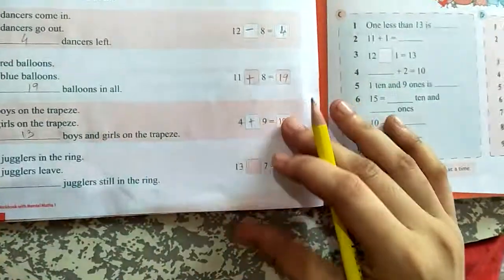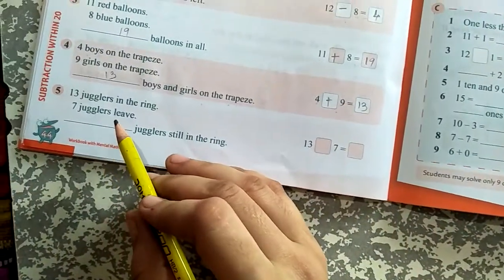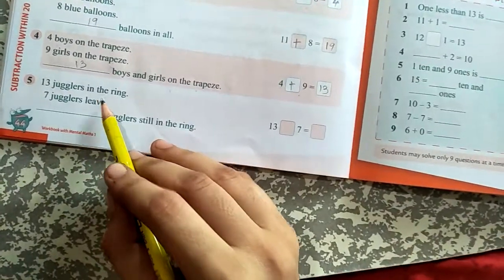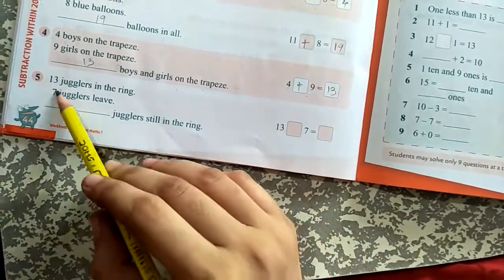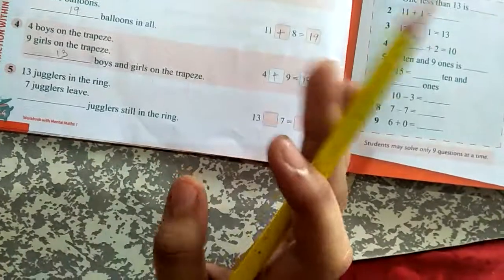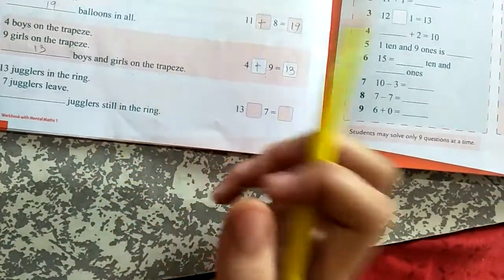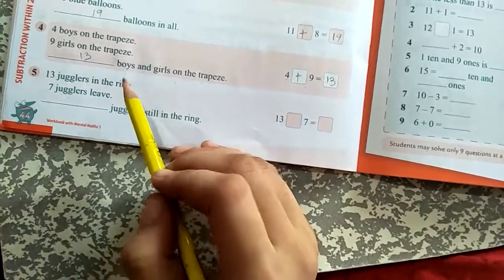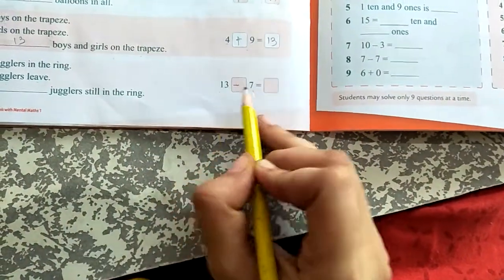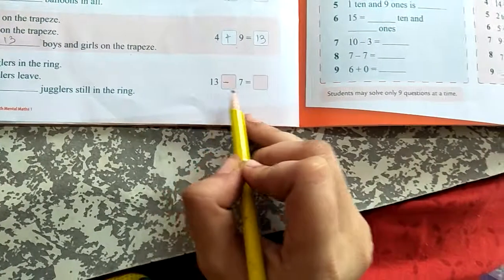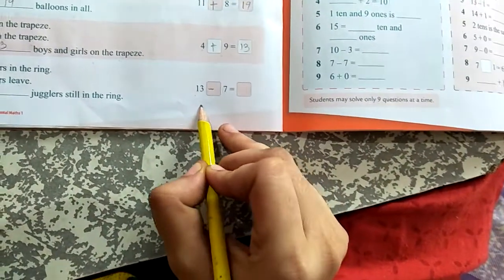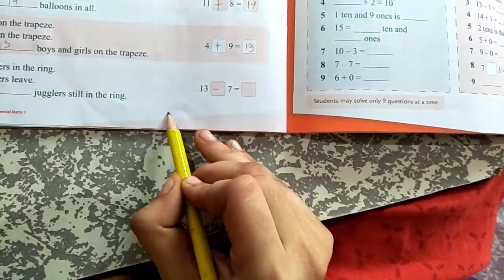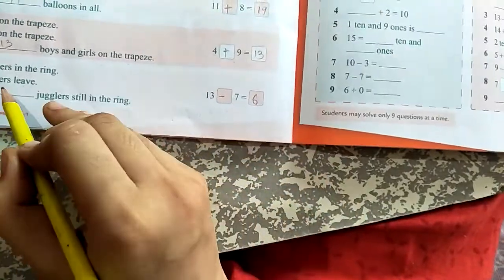13 jugglers in the ring. 7 jugglers leave, dash jugglers still in the ring. So leave is the sign that we have to use minus sign. 13 minus 7. What you can do? Counting: 8, 9, 10, 11, 12, 13. Your answer is 6.